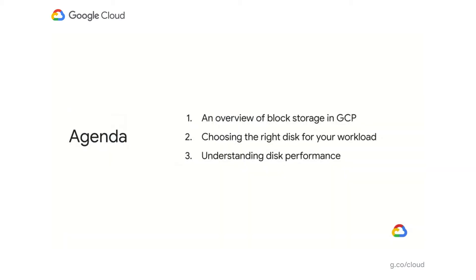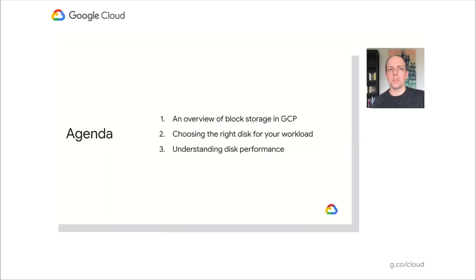In this session, we'll see an overview of block storage on Google Cloud with details of what is new this year. We cover available disk types and discuss how the new disk types fit into the product family. We then dive deeper into how to select the right disk types for your workloads to better optimize performance and cost. Finally, we'll cover some details of how throttling and performance works for block storage, ending with some simple best practices.